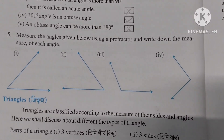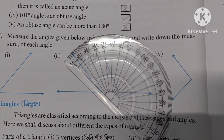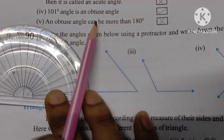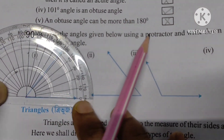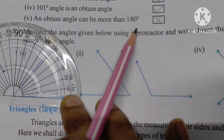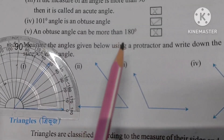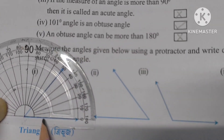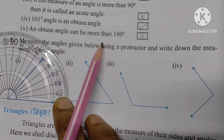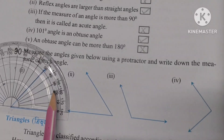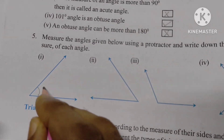This is the protractor. We will put the protractor on the angle. Then we will be able to measure it. How many degrees are? I am reading 50 degrees — 10, 20, 30, 50 degrees. So, how many degrees? 50 degrees.